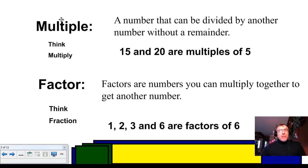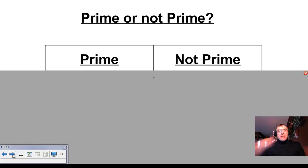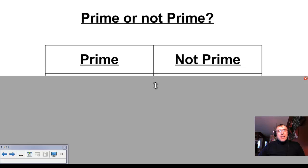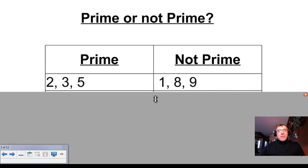Now that we know what a multiple is and what a factor is, let's think about some numbers. I'm going to give you a question — a chart where numbers are either prime or not prime. I want you to think about what makes the left side prime. The number 2 is a prime number. The numbers 3 and 5 are also prime numbers. What do they have in common?